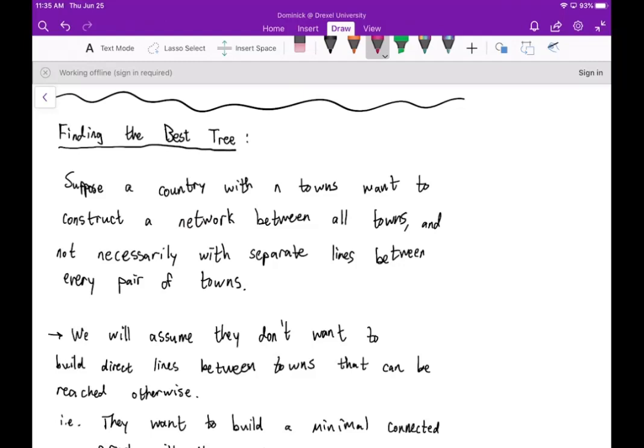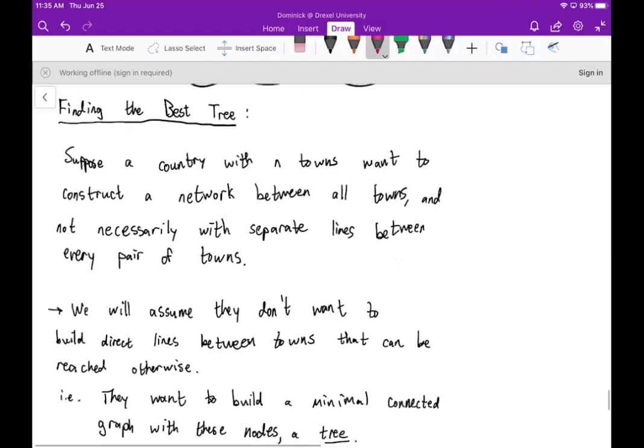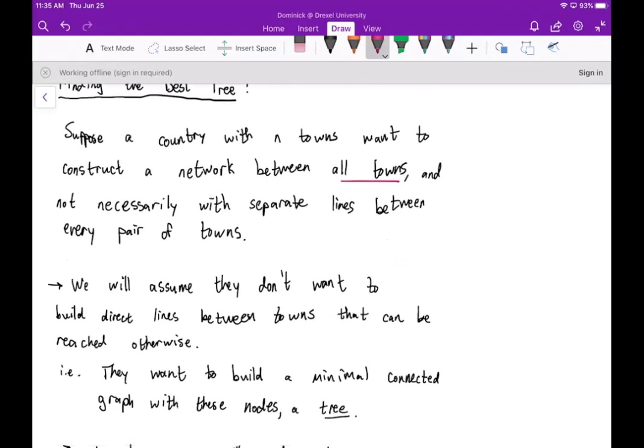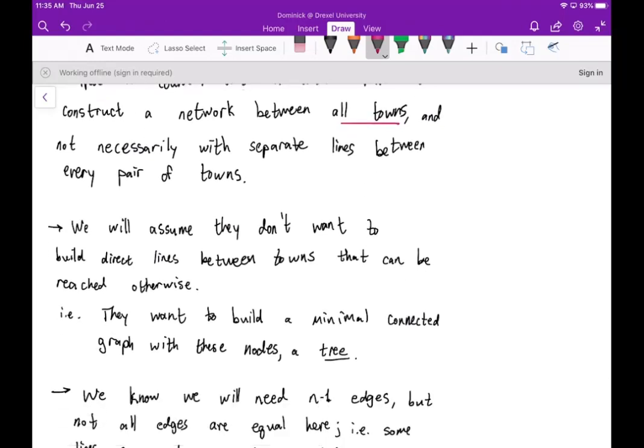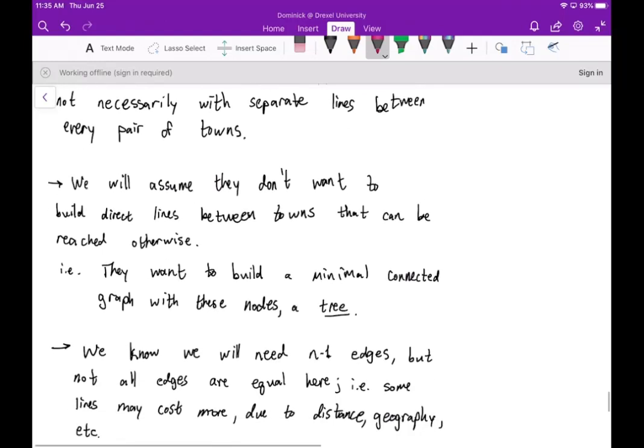Not necessarily with separate lines between every pair of towns, right? So we just essentially want all these towns to be connected in some way. Now we will assume that they don't want to build direct lines between towns that could be reached otherwise.